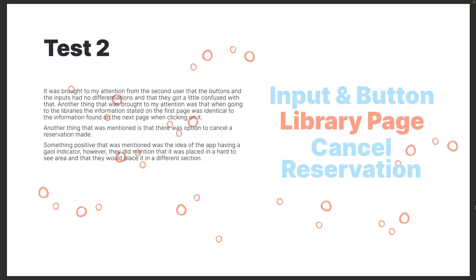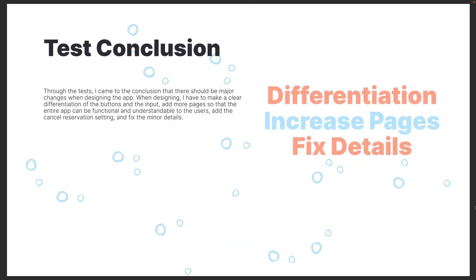For the library page, I had a short problem where the information shown in the wireframes and the information when you clicked through was exactly the same, so I had to fix that. Something positive was that the goal indicator was well received, but as mentioned earlier there were some complications — it wasn't easy to see, so I switched it to the home area. The conclusion was I had to differentiate buttons and inputs, increase the number of pages, and fix some of the details.